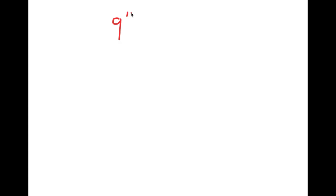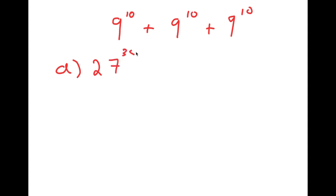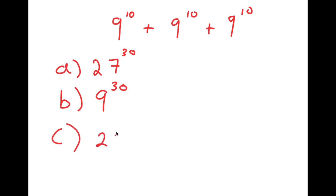In this video, I'm going to be solving the problem 9 to the power of 10 plus 9 to the power of 10 plus 9 to the power of 10. There are four answer choices: A) 27 to the power of 30, B) 9 to the power of 30, C) 27 to the power of 10, and D) 3 to the power of 21.